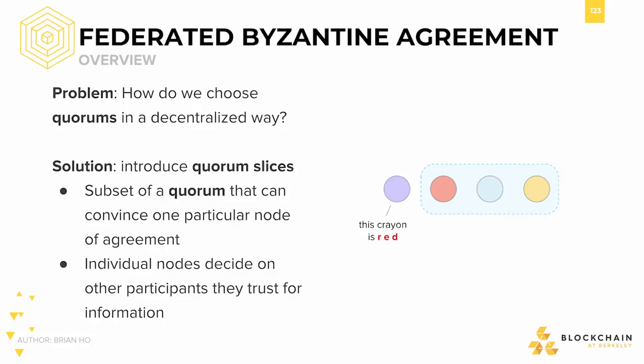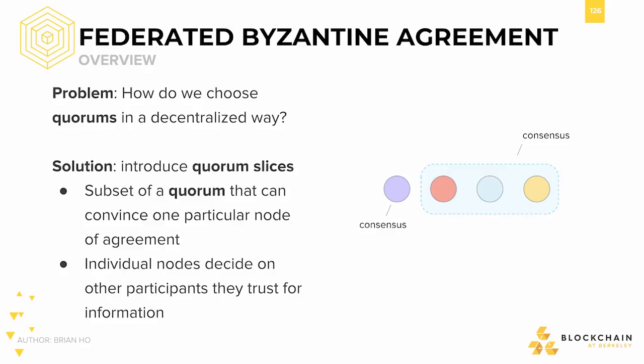Let's say you're the purple node, the leftmost of this set of four nodes. You believe a crayon to be red. The other nodes, who happen to be in your quorum slice, tell you that the crayon is actually green. Because you have decided to trust them, you change your opinion, instead coming to consensus with them that the crayon is, in fact, green. You then celebrate and rejoice the ability of trust to permeate through a decentralized network and allow you to reach consensus.